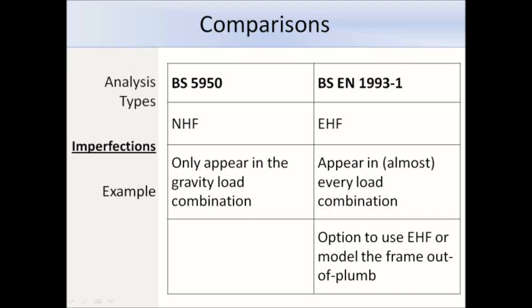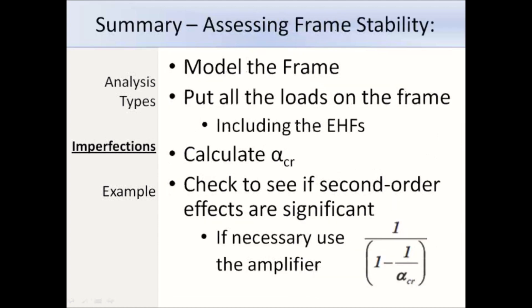Here is a summary of the steps needed to assess the stability of a frame. First we need to model the frame and put on all the loads, including the equivalent horizontal forces. After putting on the loads we can work out alpha crit using the formula and determine if second order effects are significant. If the effects are significant then we can use the amplifier. Now that I have gone through the theory I am going to go through an example from the SCI website.